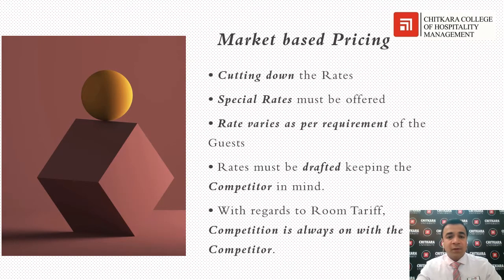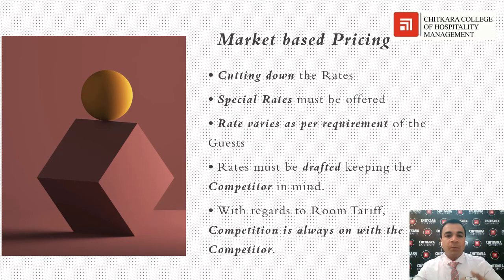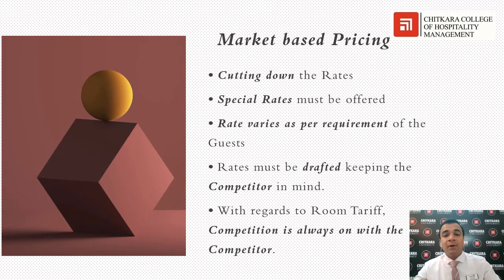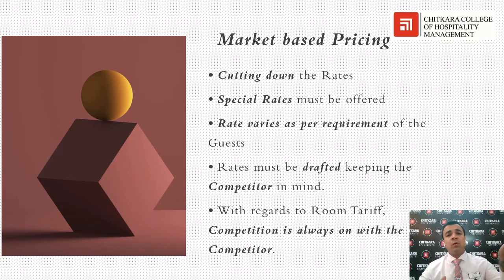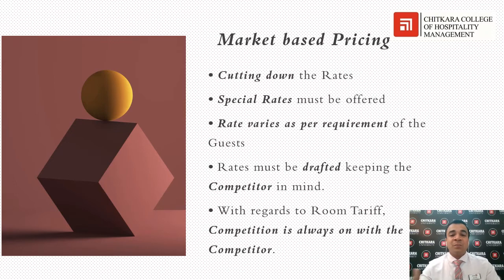A lot of hotels in northern India drop their prices during lean season — for example, in the months of June and July when they're not doing well — they bring down rates to have more occupancy. The drawback is that revenue may go down. But when we talk about September and October, rates can go up depending on the clientele, the season, and the business being given to the hotel. When it's lean season, rates might go down, and keeping the clientele in mind, rates may vary as per the guests.